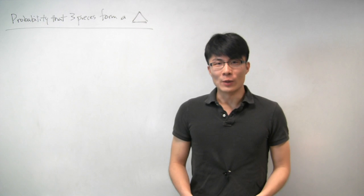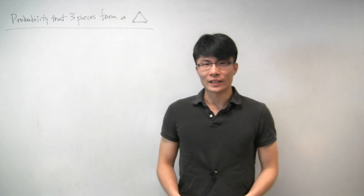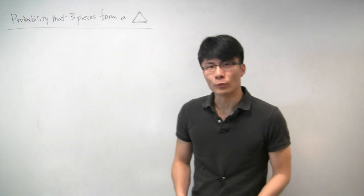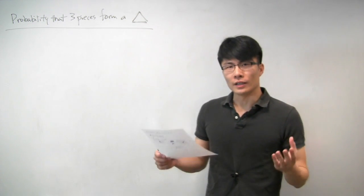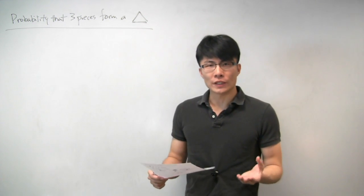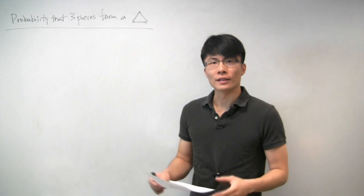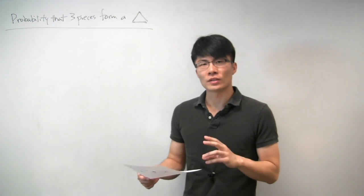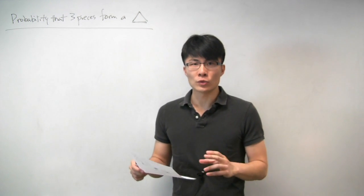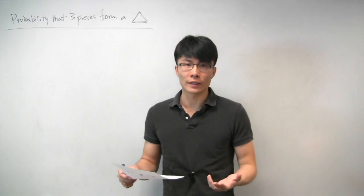In this problem, we're going to look at the probability that when you take a stick and break it into three pieces randomly, that these three pieces can actually be used to form a triangle.